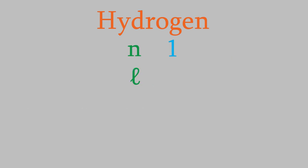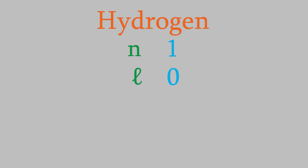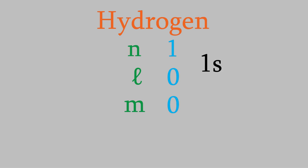Now we'll look at l. l can have a value from zero up to n minus one. In this case, that means l must be equal to zero, so the electron is in a 1s orbital. For m, since l equals zero, m must also be zero. Finally, for the quantum number s, s can be negative or positive one half. There's really no reason why one is any more likely than the other, so s could be either one. Knowing these four quantum numbers tells us a lot about how the atom will behave and what it looks like.